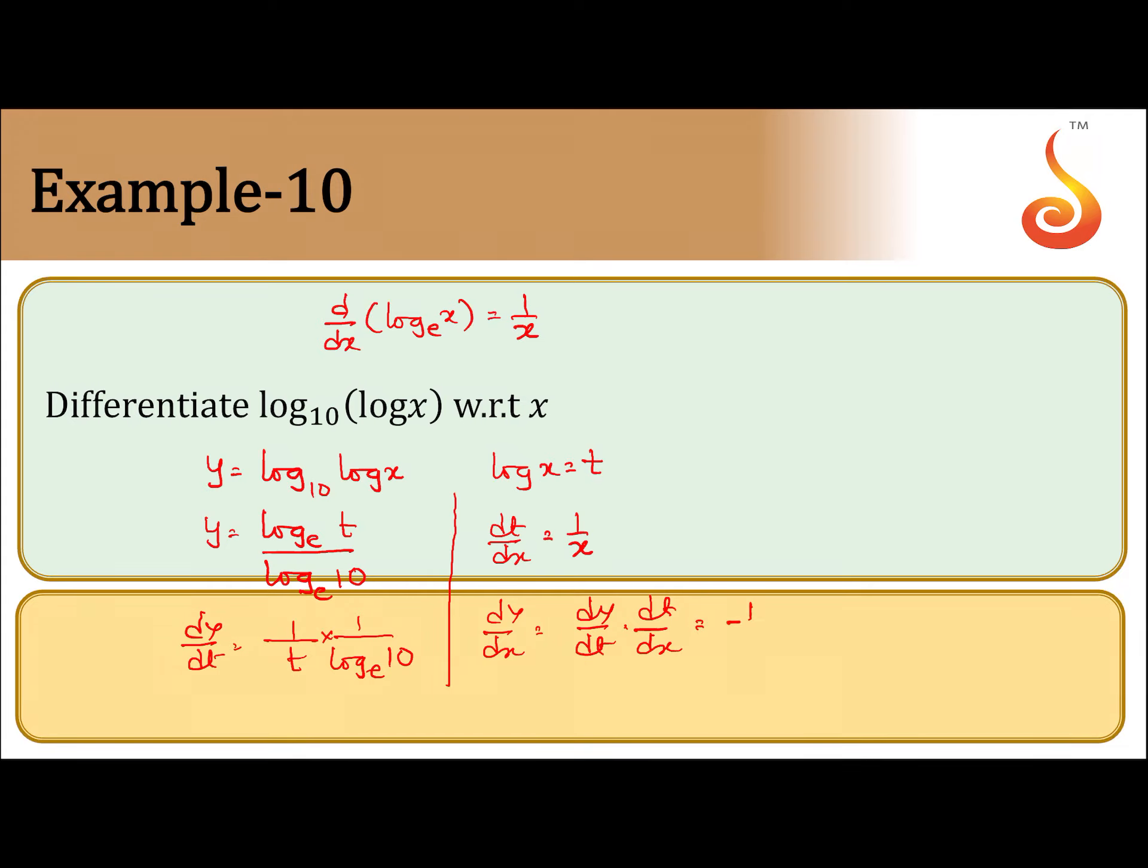So what is dy by dt? 1 by t into 1 by log base e 10 into dt by dx is 1 by x. This is in turn what is t?